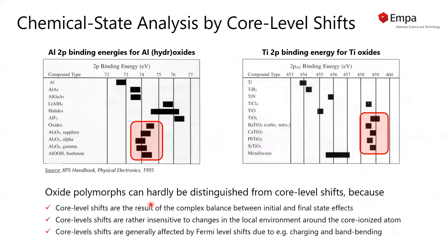If we now use these core level shifts for chemical state analysis, we have some problems as shown here. On the left, I plotted the aluminum 2p binding energy for different aluminum compounds, and on the right side, the titanium 2p binding energy for different titanium compounds.